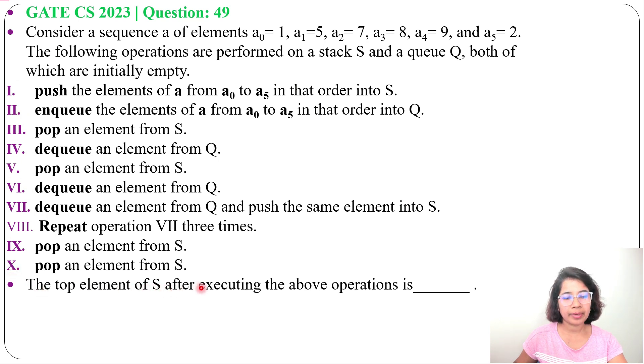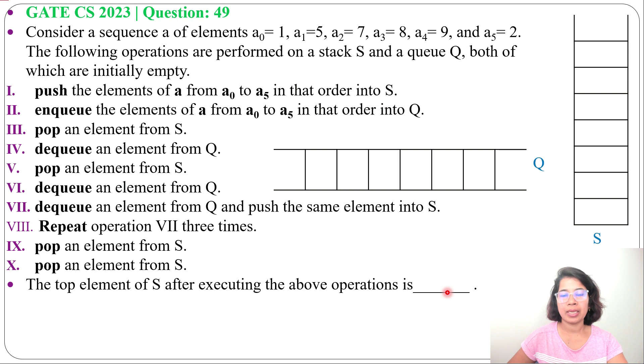The top element of S after executing the above operations is dash. So initially both stack and queue are empty. In stack we can do push and pop at top, while in queue we can enqueue at backend and we can dequeue from the frontend.